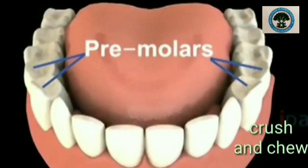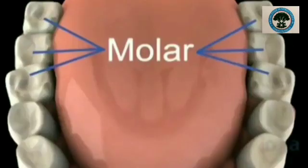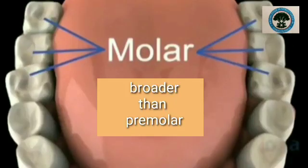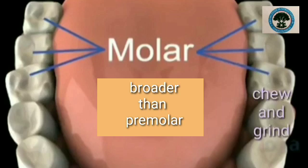And finally, molars. Molars are bigger, flatter and broader teeth. There are six molars in each jaw, so twelve molars in total. They also help to chew and grind the food.